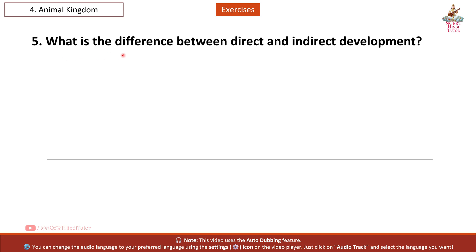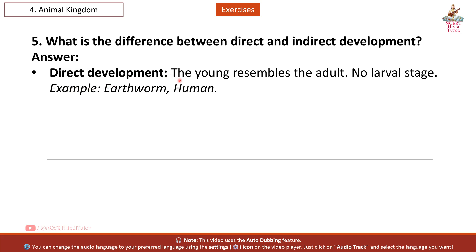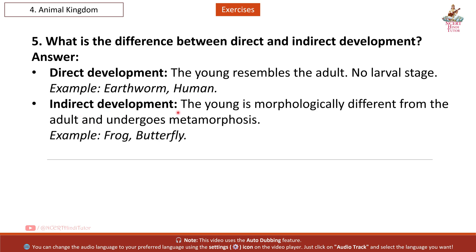Question 5: What is the difference between direct and indirect development? Answer: Direct development — the young resembles the adult, there is no larval stage; examples: earthworm, human. Indirect development — the young is morphologically different from the adult and undergoes metamorphosis; examples: frog, butterfly.